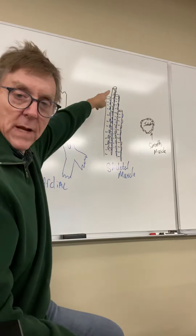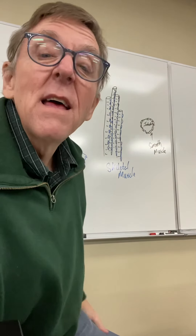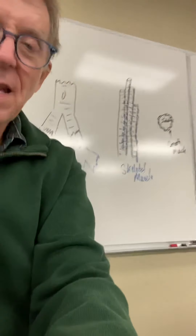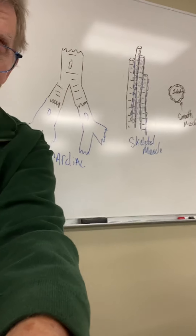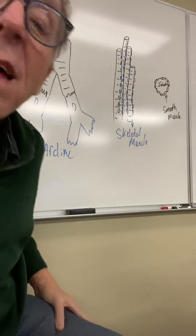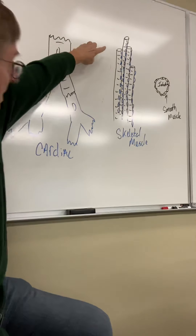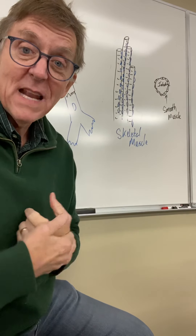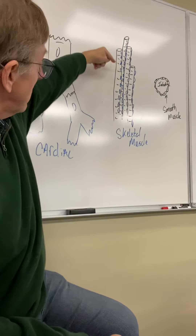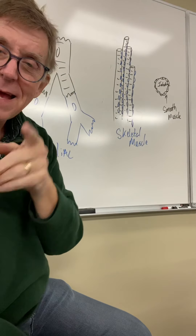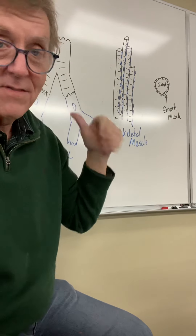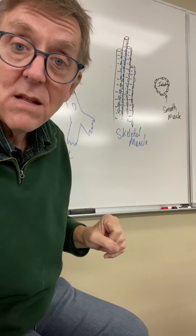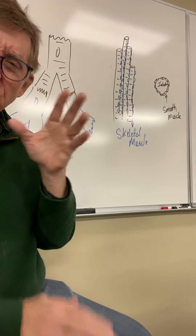This first one here — skeletal muscle — and these cells can be really, really long. Let me get a closer view so you can see it better. You can see this is skeletal muscle. They can be 30 centimeters, about 12 inches long, and they're striped — they're striated — and they're voluntary. You can also see they're multi-nucleate.